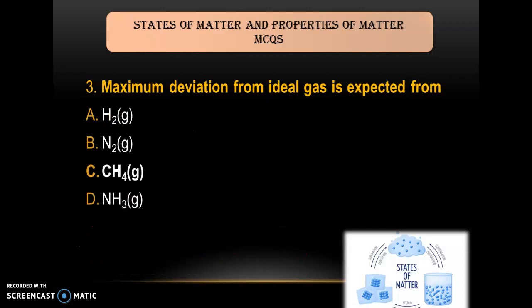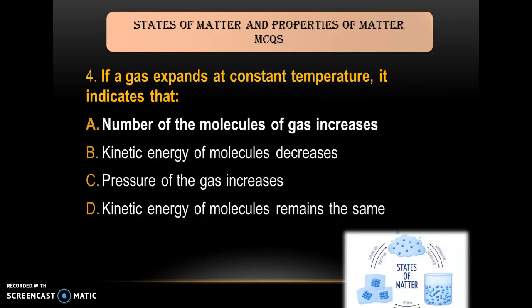Question 3: The maximum deviation from ideal gas behavior is expected from — A) H₂; B) N₂; C) CH₄; D) NH₃. The answer is NH₃, as it shows the maximum deviation from ideal gas behavior.